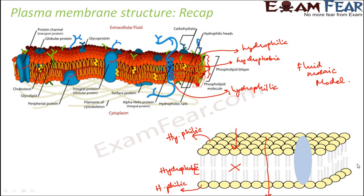This answers why some substances can move on their own: substances which are soluble in lipids can move on their own. But substances which are soluble in water — hydrophilic in nature — find it difficult to pass across the membrane, even if they are trying to move from a region of high concentration towards a region of low concentration. So they take the help of these proteins, which carry the particles from one end to another, and that is why this is called facilitated diffusion.